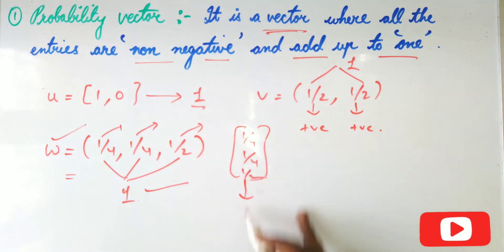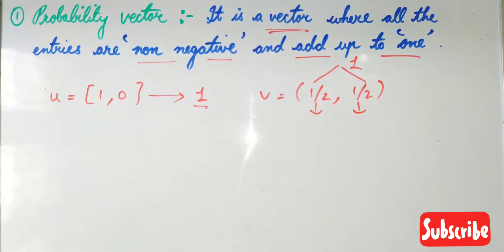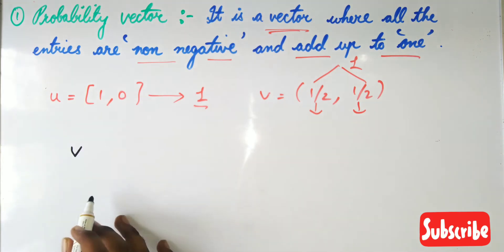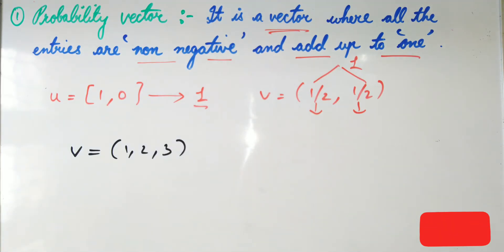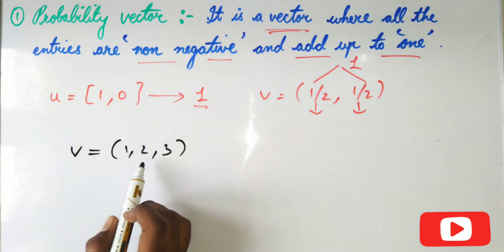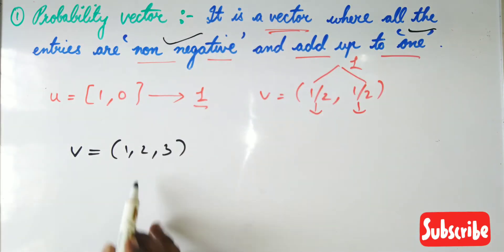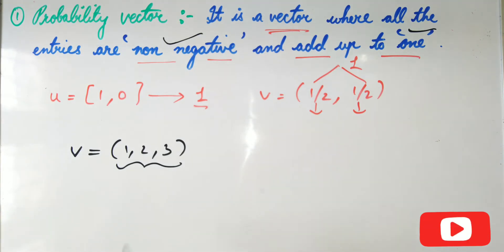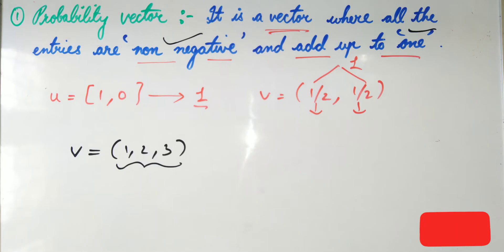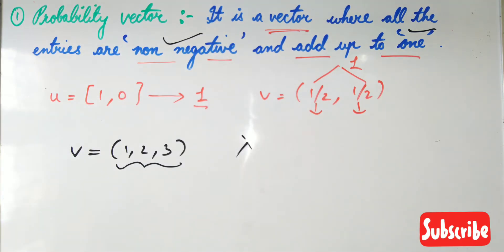One important note: suppose V = (1, 2, 3). It is not a probability vector. The entries are non-negative — 1, 2, and 3 are positive numbers — so it satisfies one condition. But when I add all of them I won't get 1. The sum is not equal to unity, so it fails the second condition.